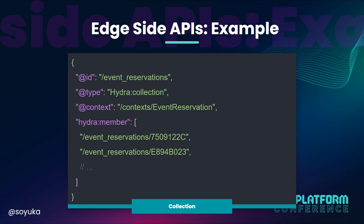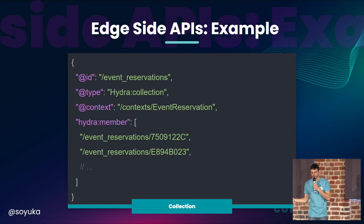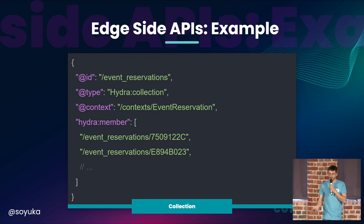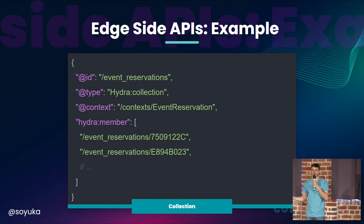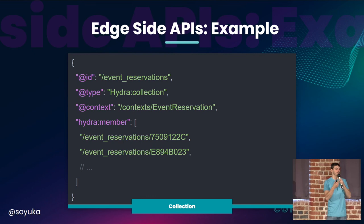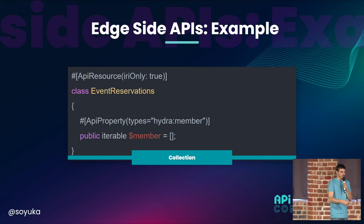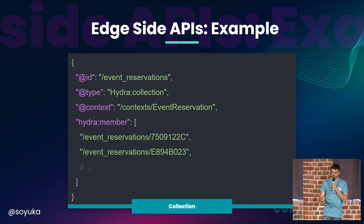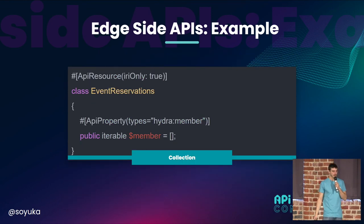Let's go back to edge side APIs Kevin talked about earlier with this small example. This is a collection of event reservations. As he said, we want resource representation to be as small as possible. This will be defined in API Platform 2.7 or 3 like this. So we have the API resource attribute where we say IRI only, because in Hydra member we have only IRIs — we don't have the whole data.